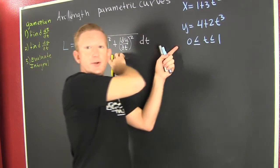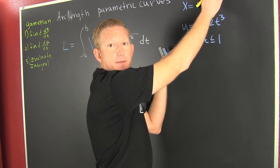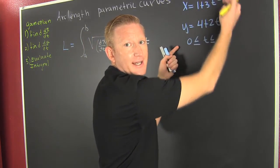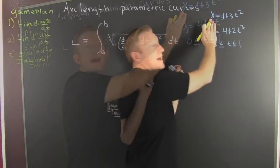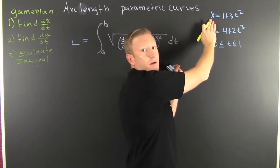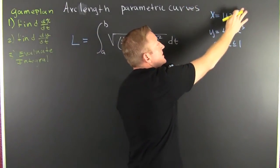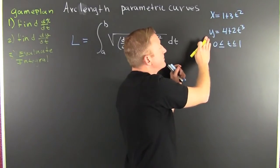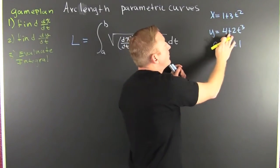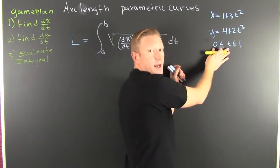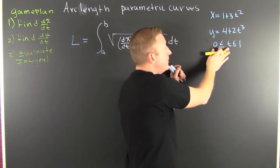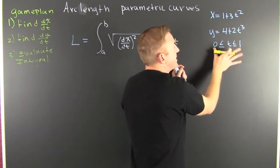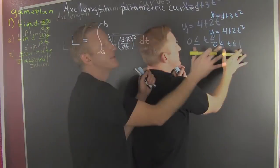We have equations up here. This is x in terms of t: 1 plus 3t squared. This is y in terms of t: 4 plus 2t to the third. And t is bounded below by 0 and above by 1 — that's our a and our b.